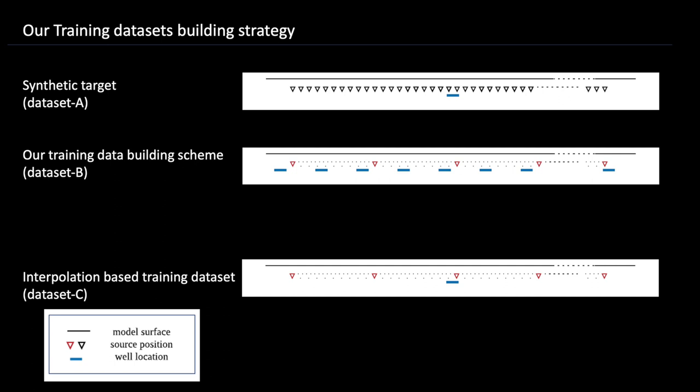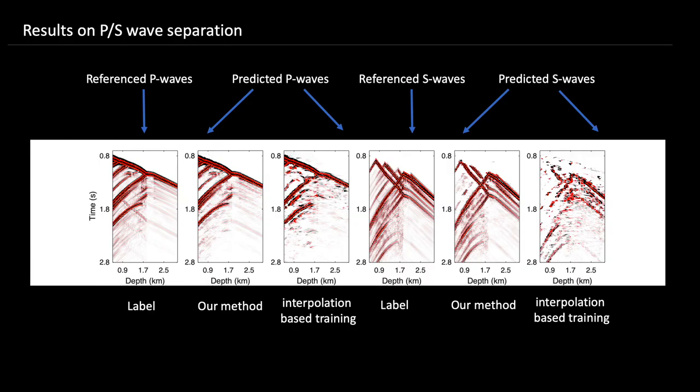We train two networks individually on dataset B and dataset C, and then test on dataset A. The testing result is exciting. Compared with the separated results using interpolated based learning scheme, results of our method are more close to the reference. It extracts most of the events, especially the waves with large amplitude. The continuity of waves is better, and the results look not that noisy.